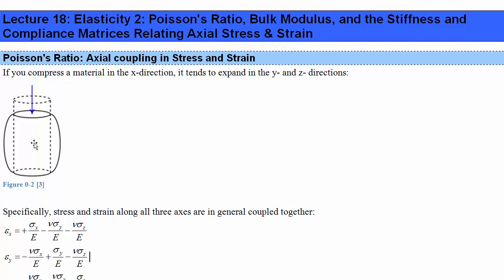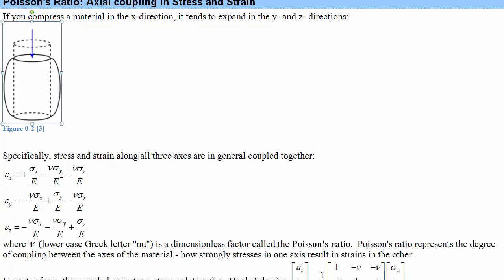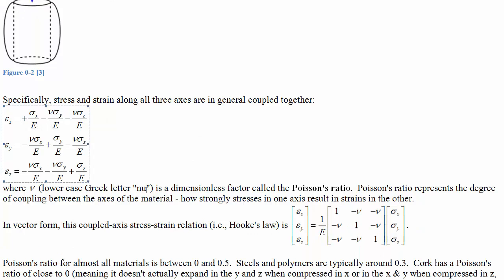Poisson's Ratio expresses the idea that as you compress a beam it tends to extend in the other directions and vice versa. If you pull a beam, it constricts in the other dimensions. In general, the stress and strain along all three axes — x, y, and z — are coupled together through a factor called nu, which is the Poisson Ratio, a dimensionless number.